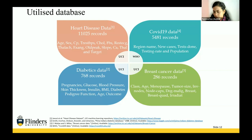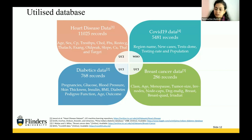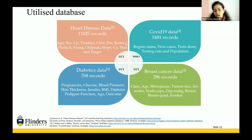The breast cancer dataset contains 286 records with 10 columns including menopause, tumor size, number of involved nodes, node caps, degree of malignancy, breast side, breast quadrant, and irradiation columns. The COVID-19 dataset contains 5,481 records with columns for result name, new cases, tests done, testing rate, and population.